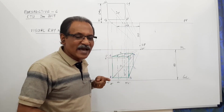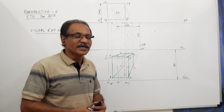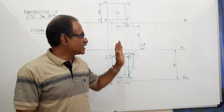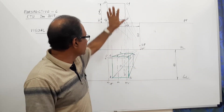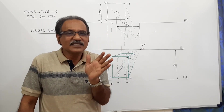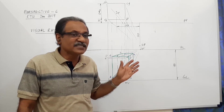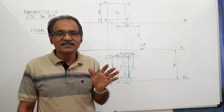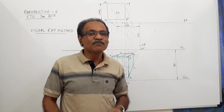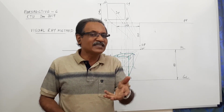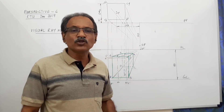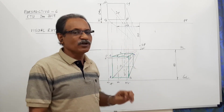Also when the axis of the object is perpendicular to VP. So visual ray method with elevation is preferred under three conditions: one, the station point is away from the vicinity of the object; two, a side of the base is parallel to VP; three, the axis of the object is perpendicular to VP. In most cases this method will be more comfortable.